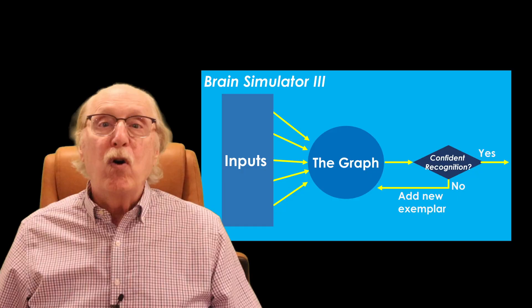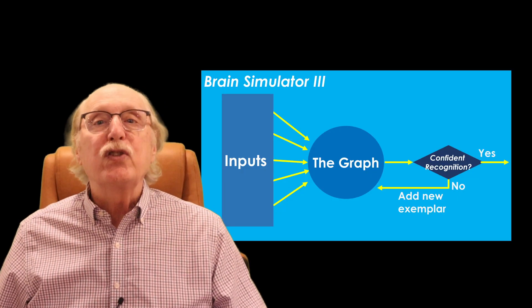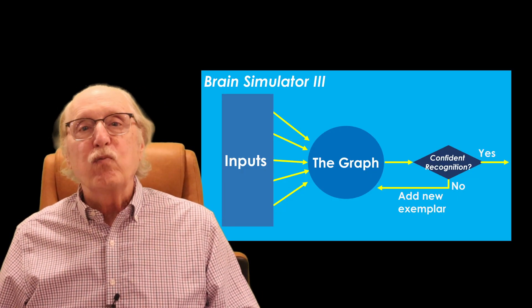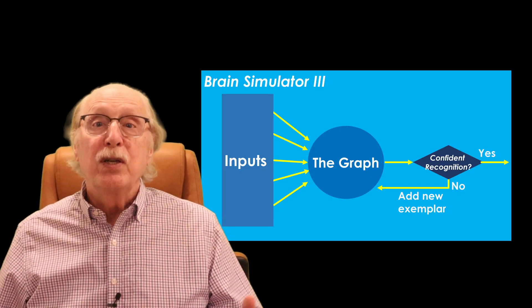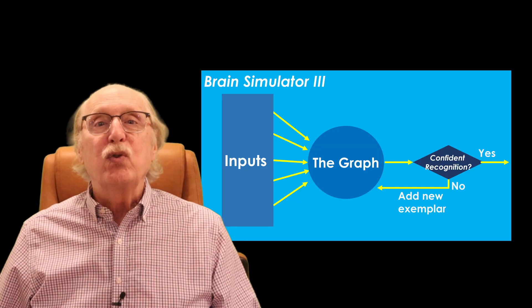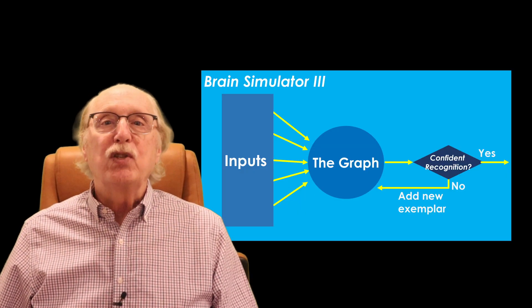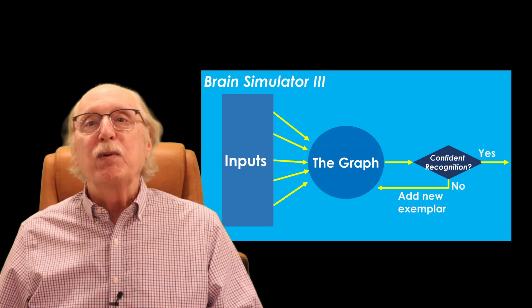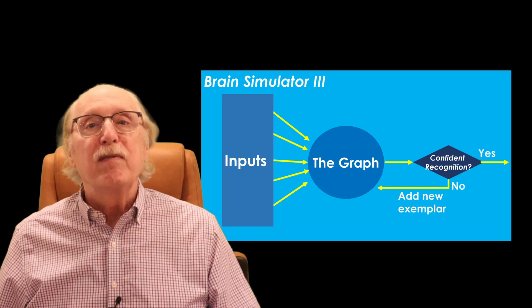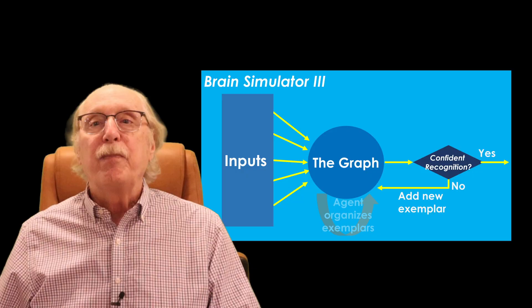If no match exists, or if the brain initially guesses wrong and is corrected, then a new exemplar is stored. So a single node representing a digit can have any number of exemplars.